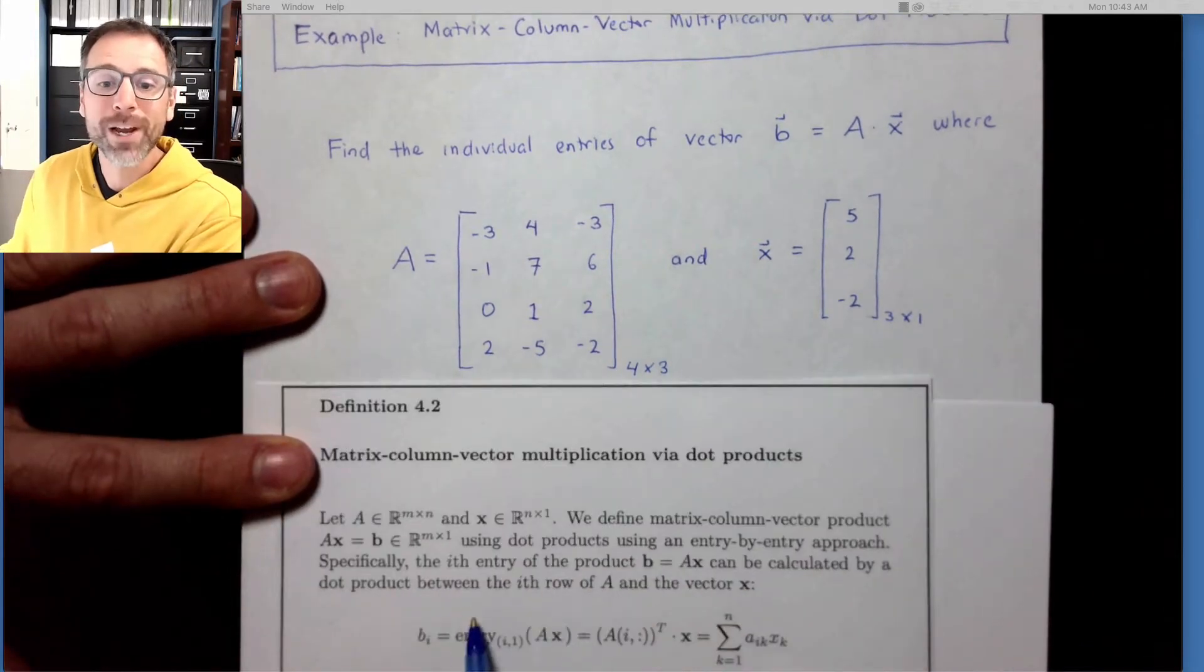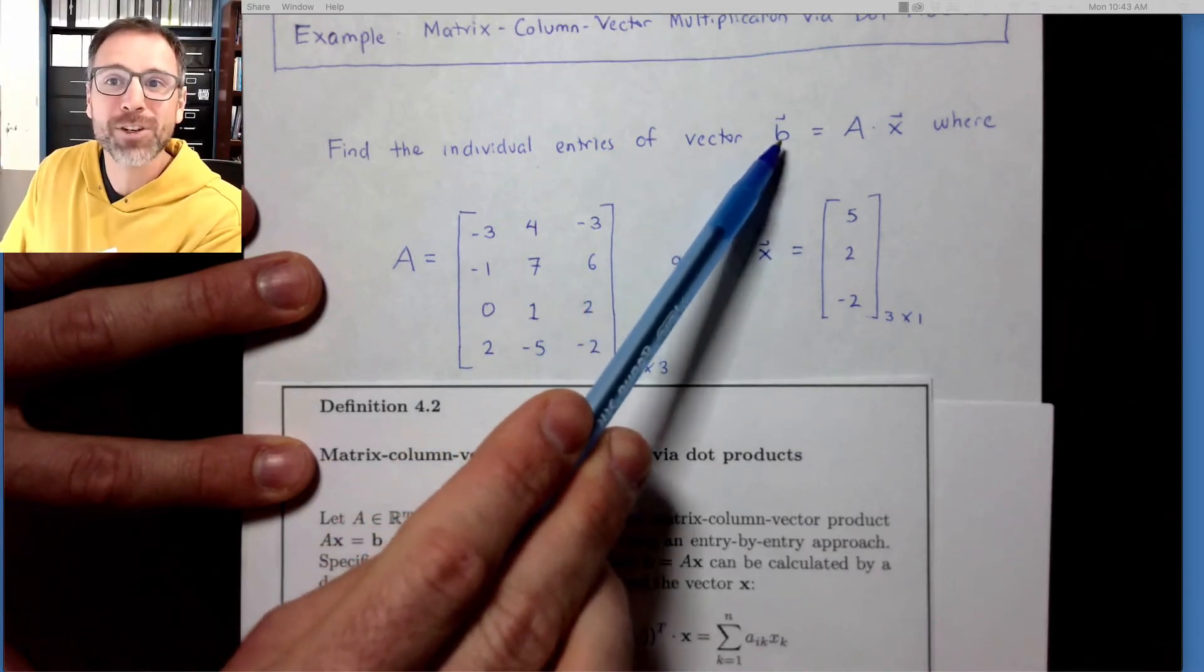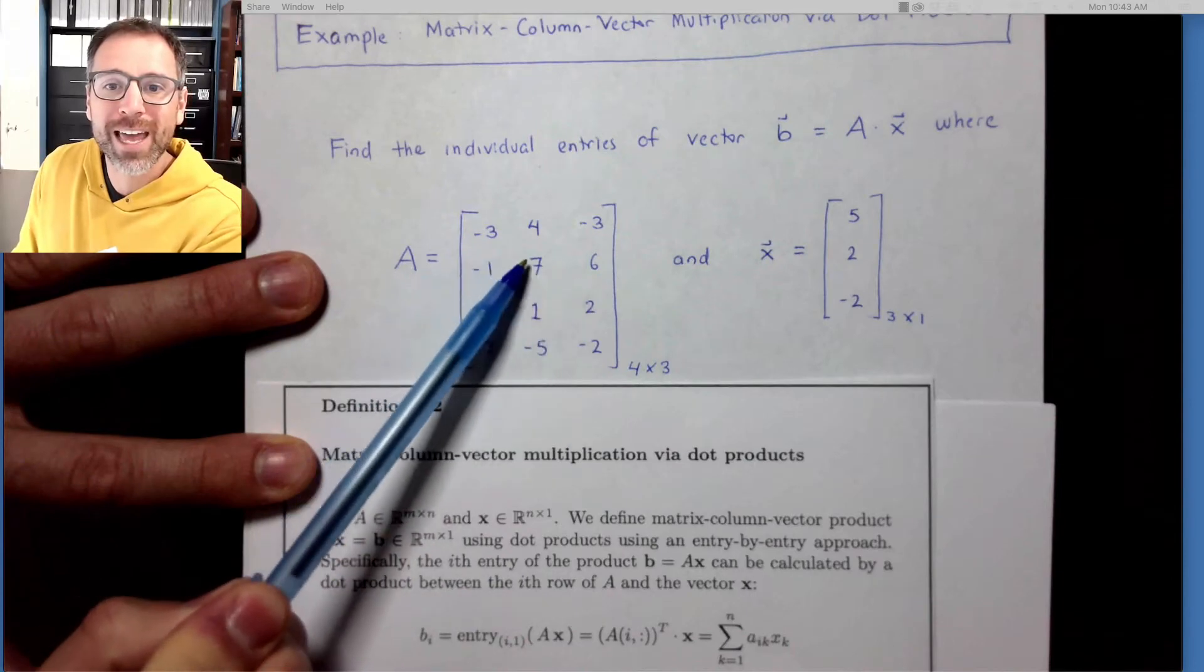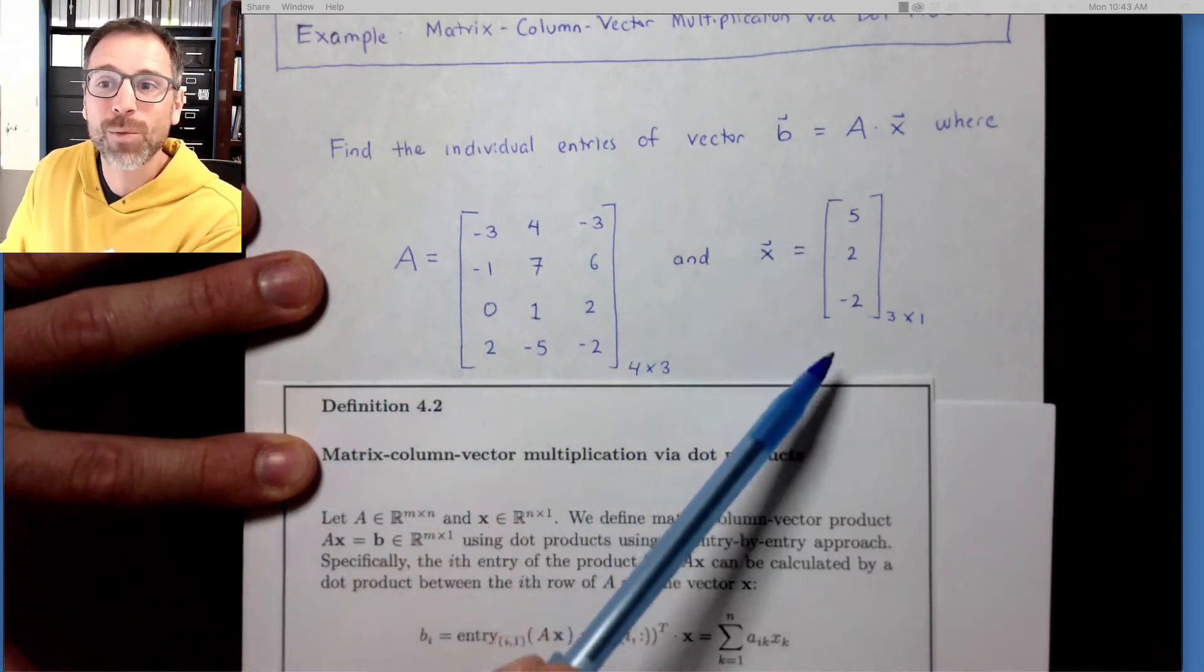Before we dive in, we'll do a quick recall that if we want to calculate the ith entry of the vector B, what we're going to do is take the ith row of A, transpose it so it's a column vector, and then dot it with the vector X.